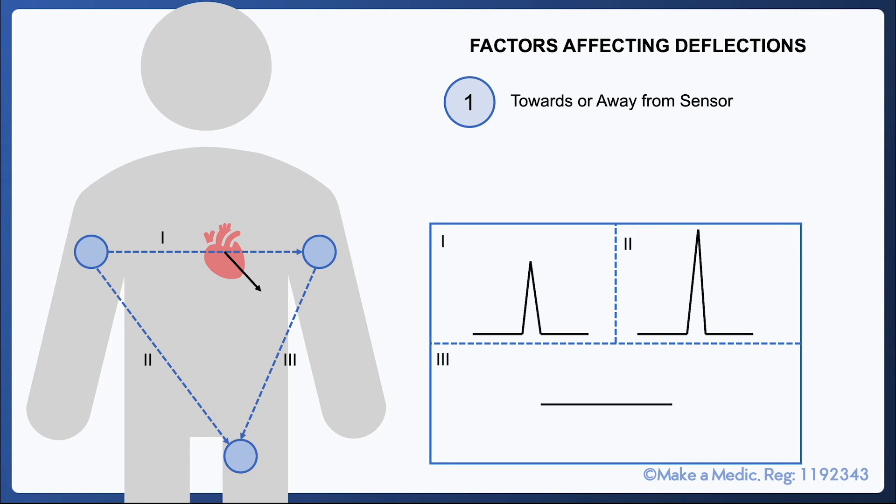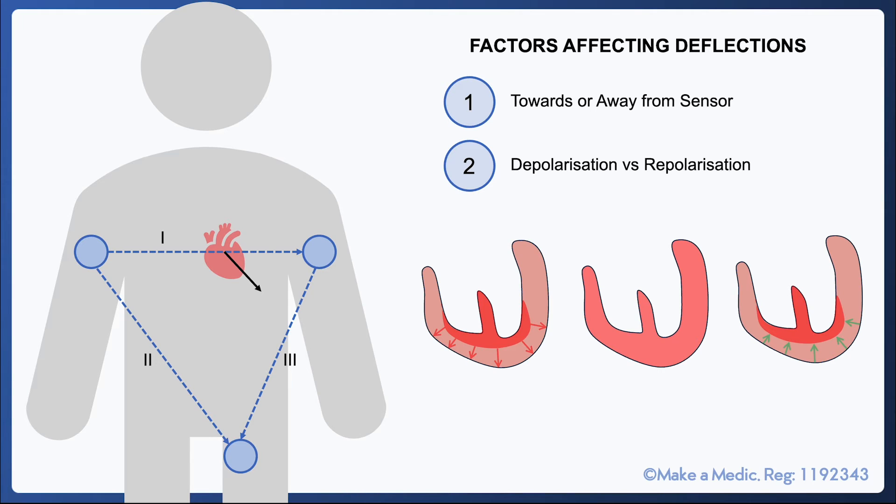The second factor determining the direction of the deflection is whether the myocardium is being depolarized or repolarized. Depolarization towards the sensor causes an upwards deflection, whereas repolarization towards the sensor causes a downwards deflection.